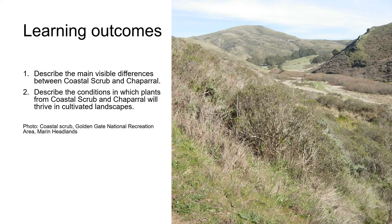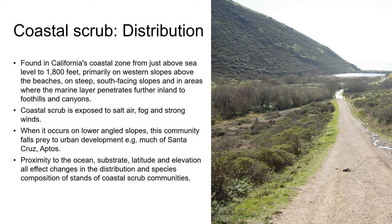Let's take a look at Coastal Scrub first. Coastal Scrub is found in California's coastal zone from just above sea level to about 1,800 feet. It's found mainly on steep western and south-facing slopes above the beaches — you can see an example in the photo taken along the Tennessee Valley Trail in the Marin Headlands, just north of the Golden Gate Bridge. Coastal Scrub can also be found in areas away from the coast where the marine layer penetrates further inland to foothills and canyons.